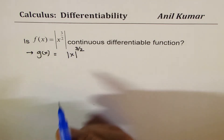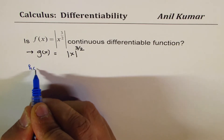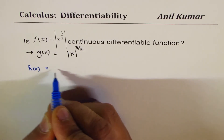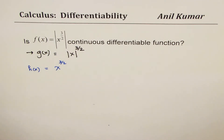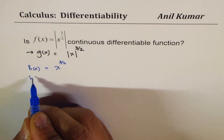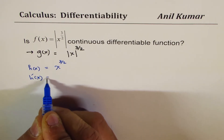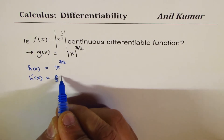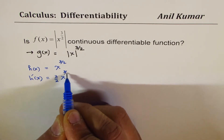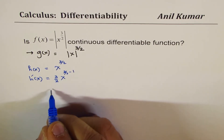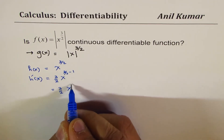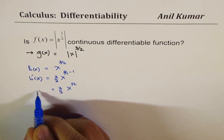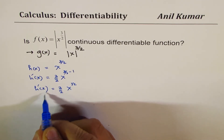Let's begin by considering another function, h of x, which equals x to the power of 3 over 2. Let's call this the base function for our example. Now, what is the derivative of this function? The derivative is 3 over 2 times x to the power of 3 over 2 minus 1, which can be written as 3 over 2 times x to the power of 1 over 2 — that is, square root of x.